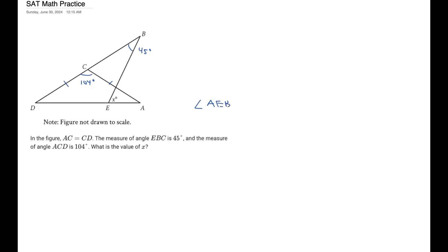How I like to approach geometry problems in general when you're trying to find an angle is just don't try and take it all in at once. Take it step by step, break it down, see what angles you can find, see what theorems you can implement, and eventually you might find the answer from that.